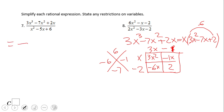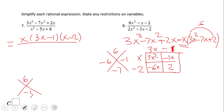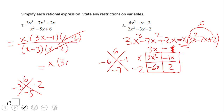Going back to number 7, the factored numerator is x times (3x minus 1) times (x minus 2) — don't forget that x out front. For the denominator, we need two numbers whose product is 6 and sum is negative 5: that's negative 3 and negative 2, giving us (x minus 3)(x minus 2). The (x minus 2) factors cancel, so the final simplified form is x times (3x minus 1) over (x minus 3).